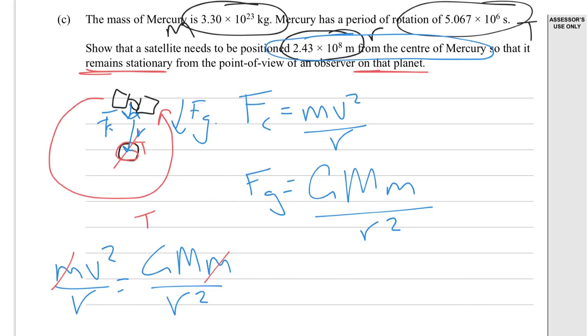We're going to cancel out one of the r squareds on the bottom, and we're going to then rearrange for r. So if I do that rearrangement for r, we're going to have r equals, which is what we're trying to find out, the radius, the position above the earth, r equals GM over v squared.